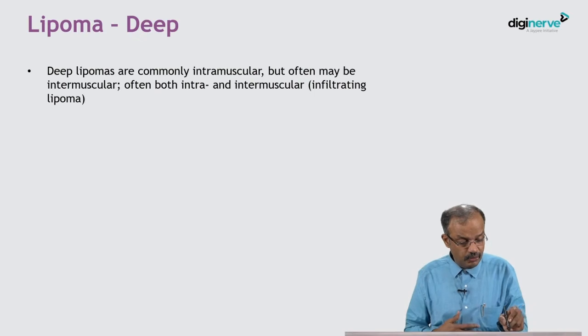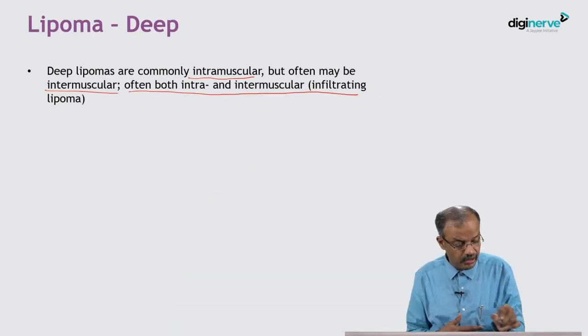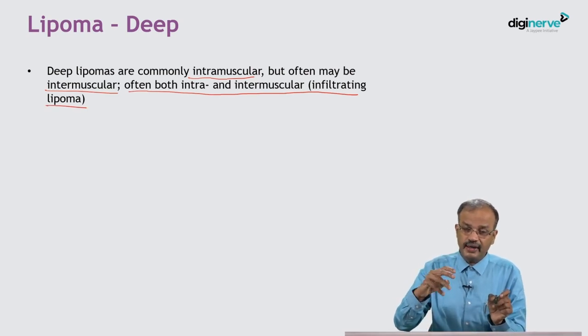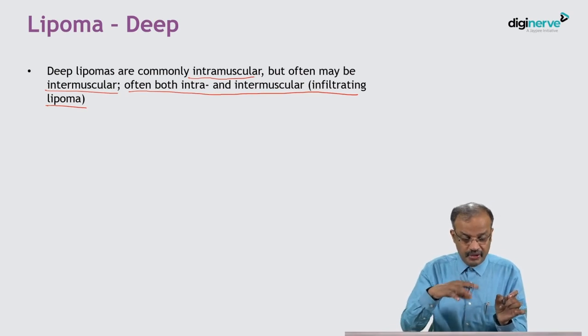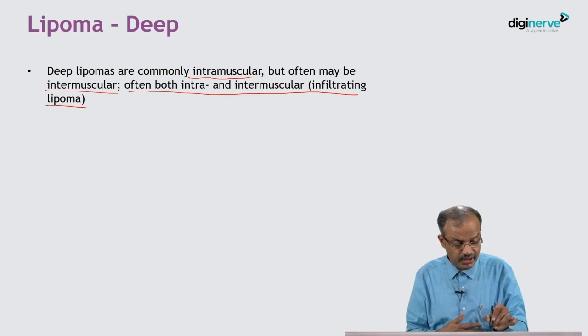Deep lipomas are commonly intramuscular — inside the muscle or in between two muscles, which is intermuscular. They can be submuscular, deep to the muscle plane, or sometimes both intra- and intermuscular, which is called an infiltrating lipoma. This infiltrating term does not mean malignancy — infiltrating lipoma is benign only. It simply means the lipoma extends both inside the muscle and deep to it.